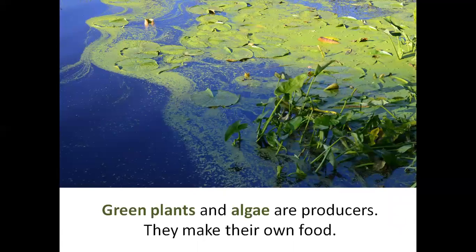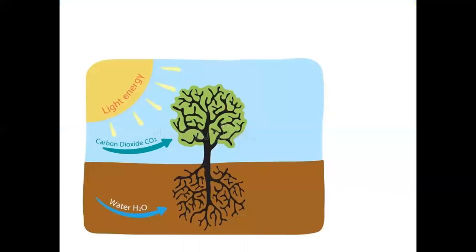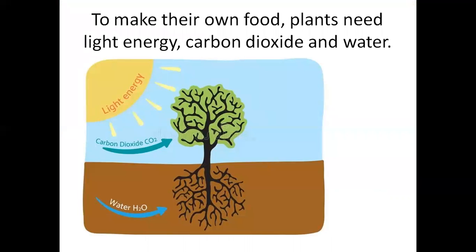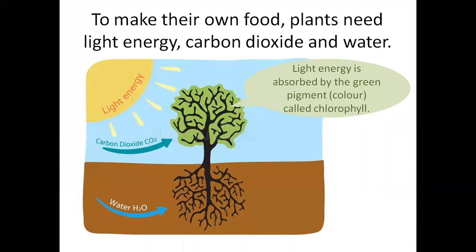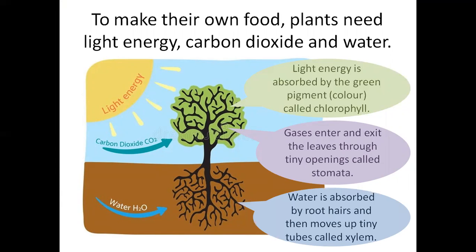Green plants and algae are producers — they make their own food. To photosynthesize, plants need light energy, carbon dioxide gas, and water. Light energy is absorbed by the green pigment called chlorophyll. Gases enter and exit the leaves through tiny openings called stomata. Water is absorbed by root hairs and then moves up tiny tubes called xylem.